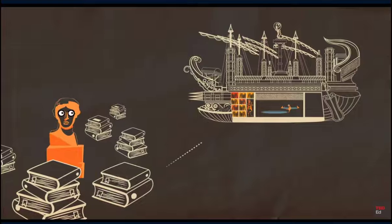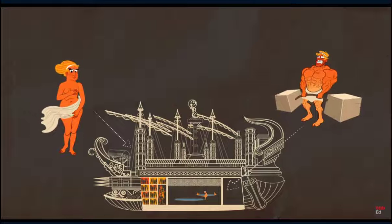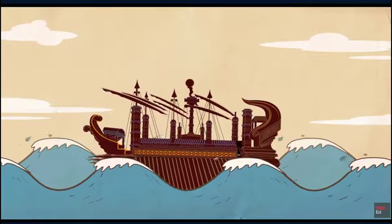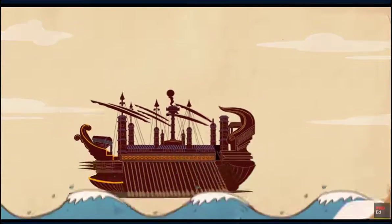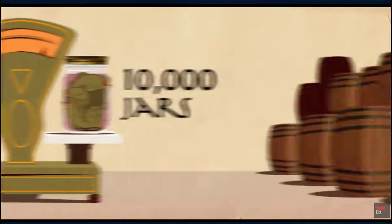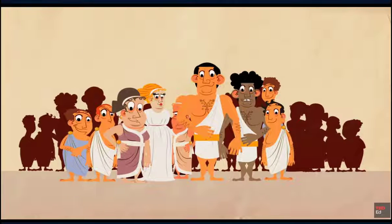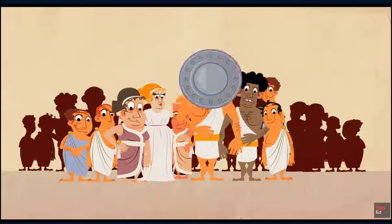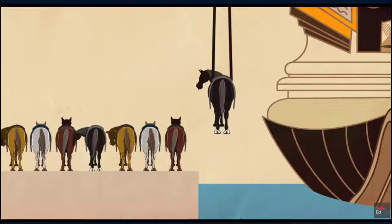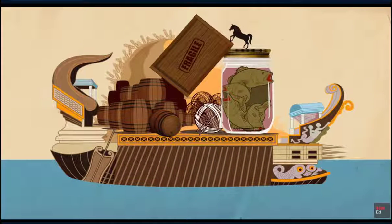The ship also featured a library filled with books and statues, a temple to Aphrodite, and a gymnasium. Its cargo would include 400 tons of grain, 10,000 jars of pickled fish, 74 tons of drinking water, and 600 tons of wool. It would carry over a thousand people including 600 soldiers, and housed 20 horses in separate stalls.